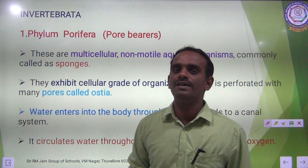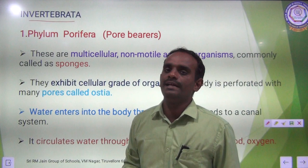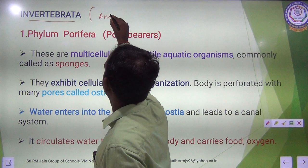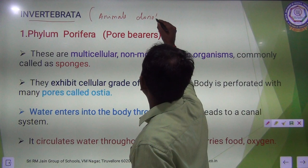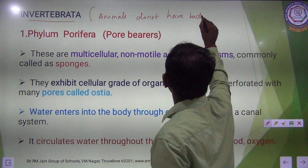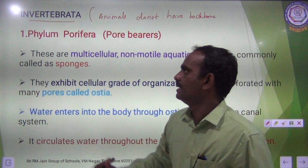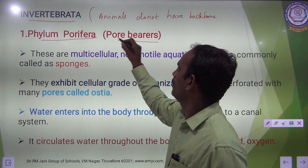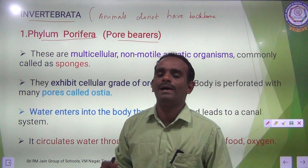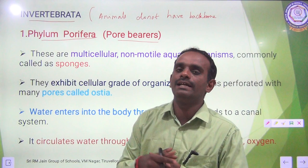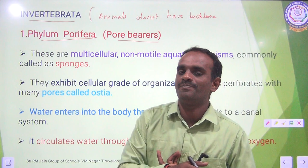We now move on to Invertebrates. The word Invertebrate or Invertebrata means animals that do not have a backbone. The phyla are: Phylum Porifera, Coelentrata, Platyhelminthes, Aschelminthes, Annelida, Arthropoda, Mollusca, Echinodermata, Hemichordata, and Chordata. Among these phyla, the first eight phyla are Invertebrates.